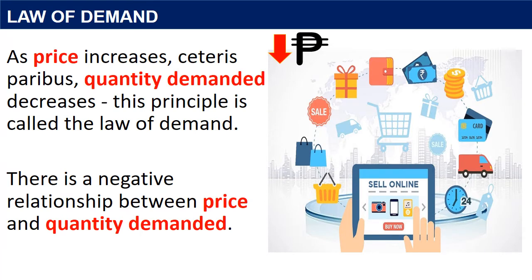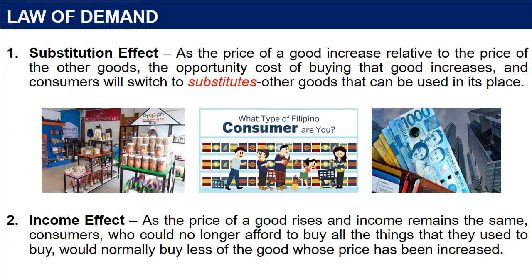As price increases, ceteris paribus, quantity demanded decreases — this principle is called the law of demand. There is a negative relationship between price and quantity demanded, observed for two reasons. First, the substitution effect: as the price of a good increases relative to other goods, the opportunity cost of buying that good increases, and consumers will switch to substitutes. Second, the income effect: as the price of a good rises and income remains the same, consumers who could no longer afford all the things they used to buy would normally buy less of the good whose price has been increased.